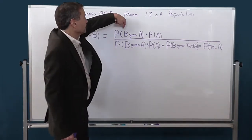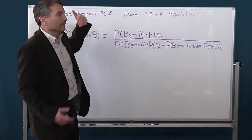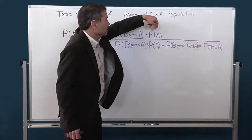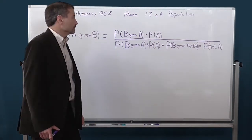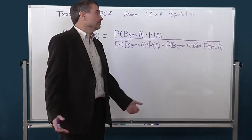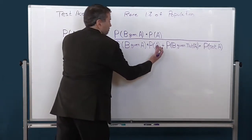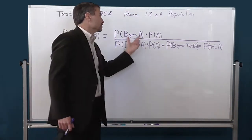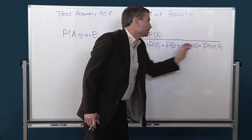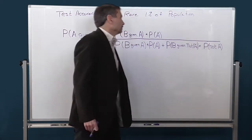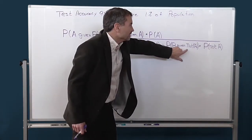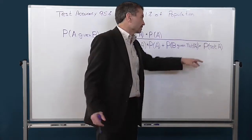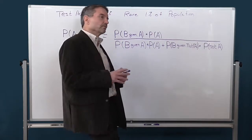We have the probability of B given A — in this case, the probability that I'm going to have a positive result given that I have the disease — times the probability of A, which is the probability based on the population: how likely is it that I have the disease to begin with when I walk in? In the denominator, we repeat the numerator and add to it the probability of B given that I don't have it — the complement — times the probability that I don't have it.